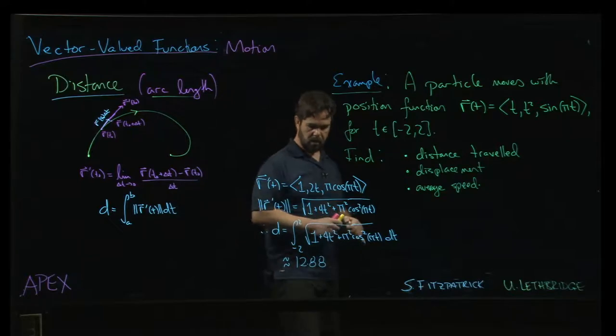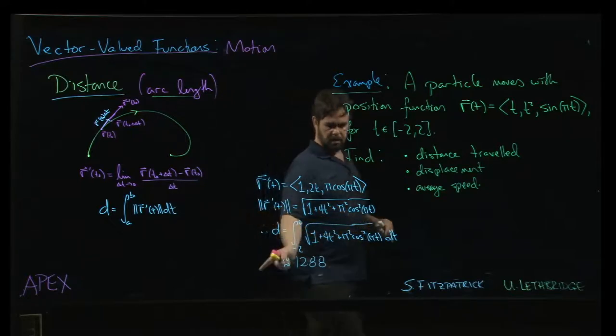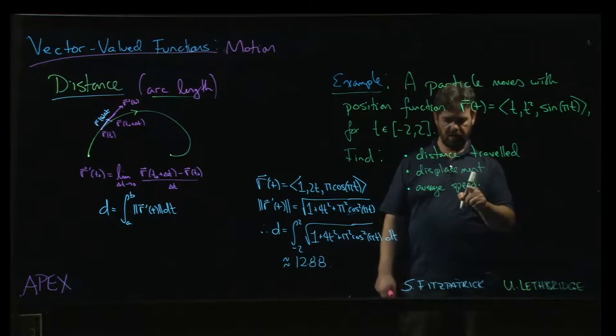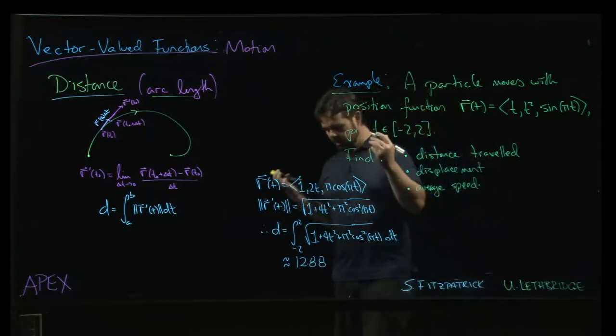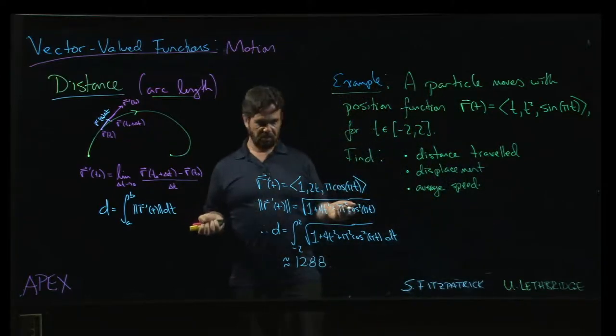Now, with that in mind, let's jump straight to average speed and then we'll come back to the displacement. Average speed should just be the total distance traveled divided by the duration of travel.